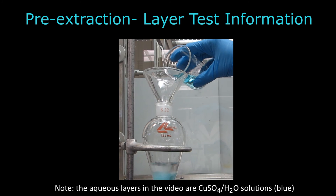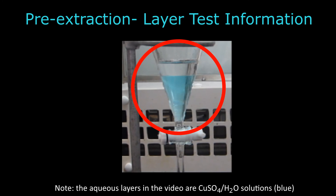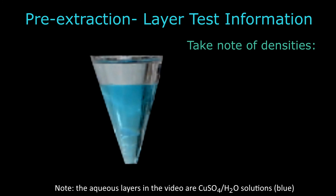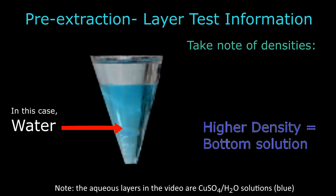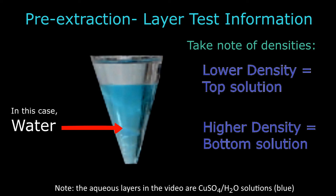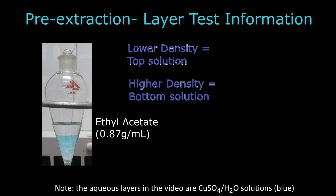Upon mixing the organic solvent with water, two distinct layers should form. To distinguish between layers, take note of the unique densities for each solvent. Dilute aqueous solutions have a density of about 1 gram per milliliter, similar to water. The solvent with higher density will be on the bottom, whereas the solvent with the lower density will be on top. For example, ethyl acetate has a density of 0.87 grams per milliliter, while water has a density of 1 gram per milliliter. When these two solvents are mixed, the organic layer composed of ethyl acetate will remain at the top.